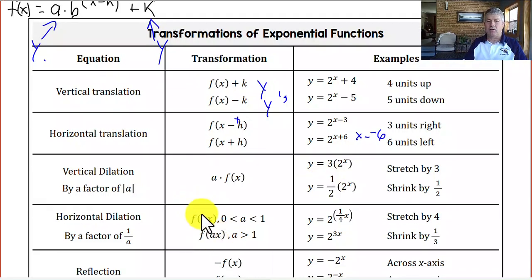Horizontal dilation, on the other hand, is changing the coefficient on the x that's inside the parentheses. So like this 1 fourth, we'll stretch it by 4 units across along the horizontal x-axis. Or 3 will shrink it by 1 third along the x-axis.